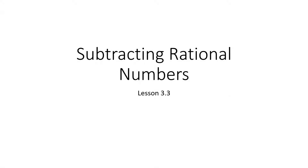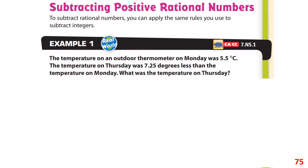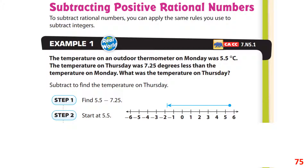Subtracting rational numbers — the rules are the same as subtracting integers. In this example, the temperature on an outdoor thermometer was 5.5 degrees, shown here on the number line.